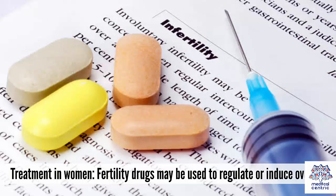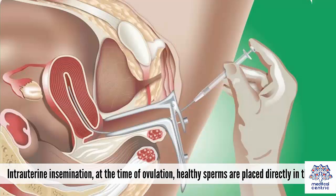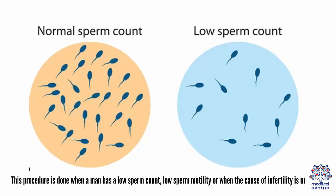Treatment in women: Fertility drugs may be used to regulate or induce ovulation. A blocked fallopian tube may be repaired by surgery, making it easier for eggs to pass through. Intrauterine insemination (IUI) involves placing healthy sperm directly in the uterus at the time of ovulation. This procedure is done when a man has a low sperm count, low sperm motility, or when the cause of infertility is unknown.